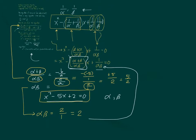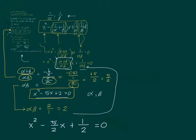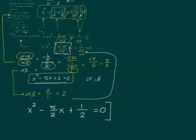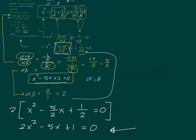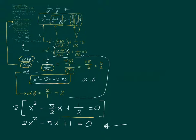We can now write the equation: x squared minus (5 over 2)x plus 1 over 2 equals 0. To eliminate fractions, multiply both sides by 2, giving 2x squared minus 5x plus 1 equals 0. This is the equation whose roots are 1 over alpha and 1 over beta.